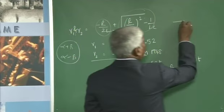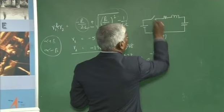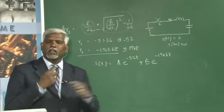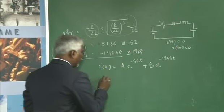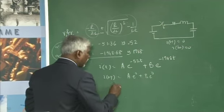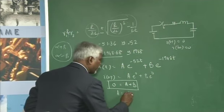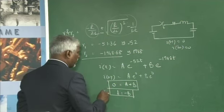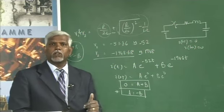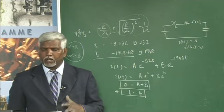To evaluate A and B we use two initial conditions. First, i(0+) = 0 (inductor prevents instantaneous current), giving A + B = 0, so A = -B. Second, di/dt at t=0+ is needed. From V = Ri + L(di/dt) + Vc, with i(0+) = 0 and Vc(0+) = 0 (no initial capacitor charge), di/dt|_{t=0+} = V/L = 200/0.1 = 2000 A/s.